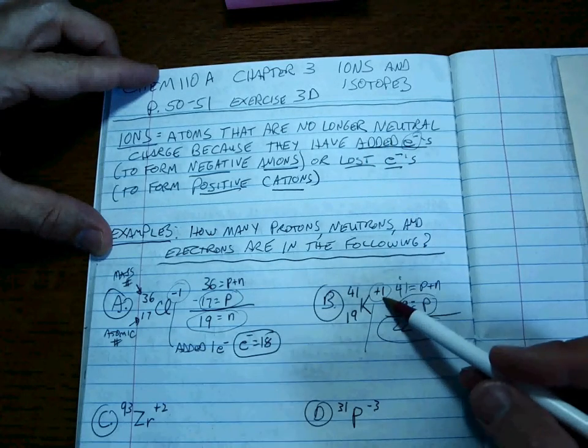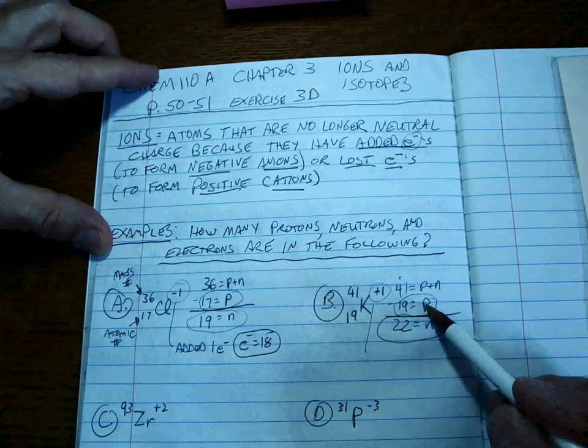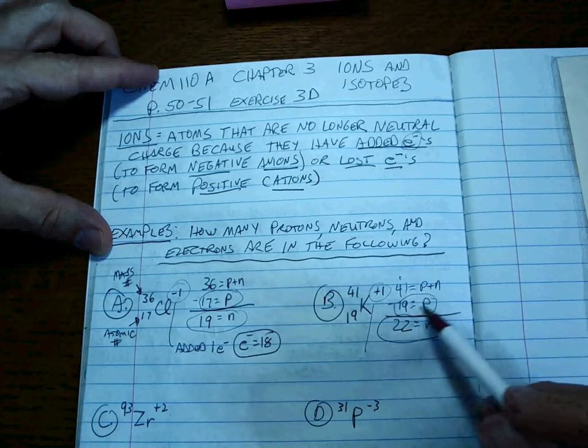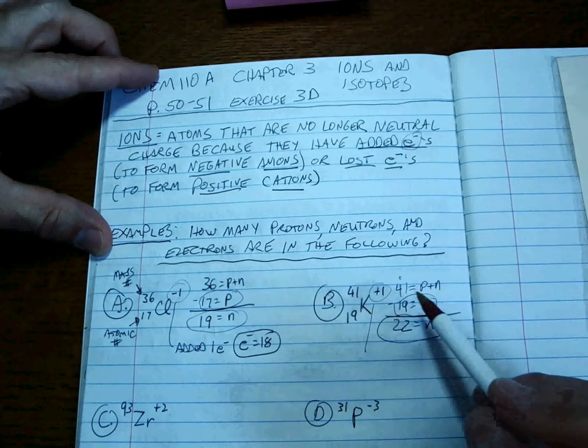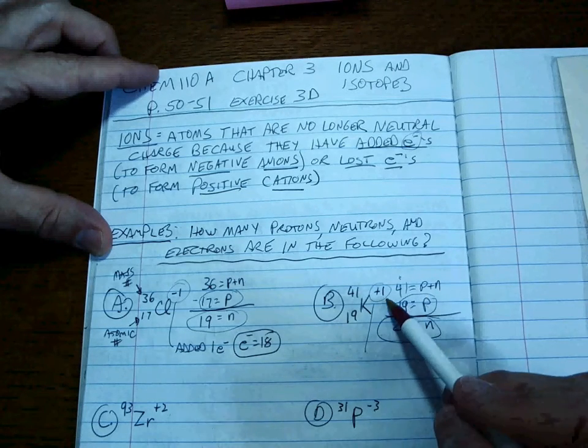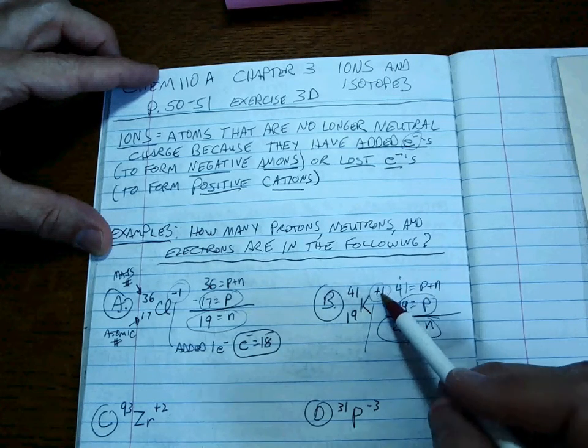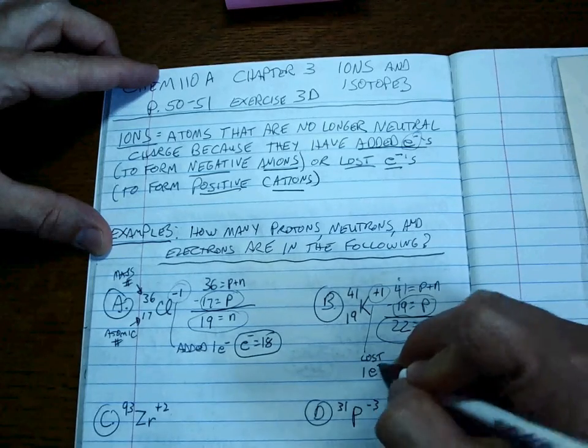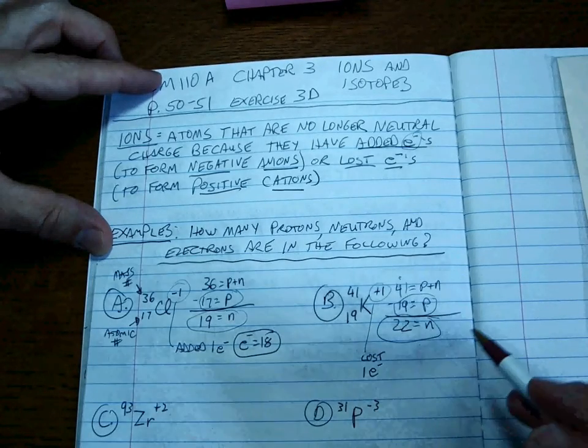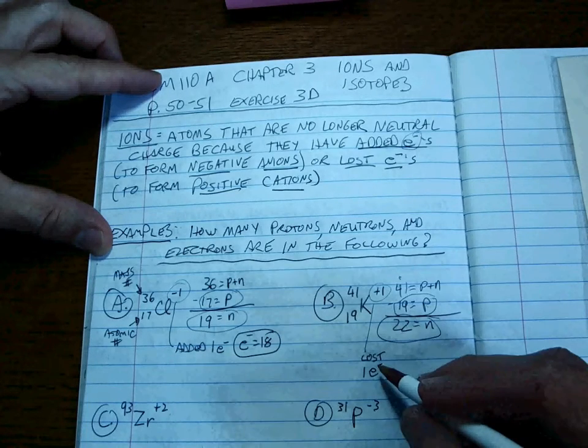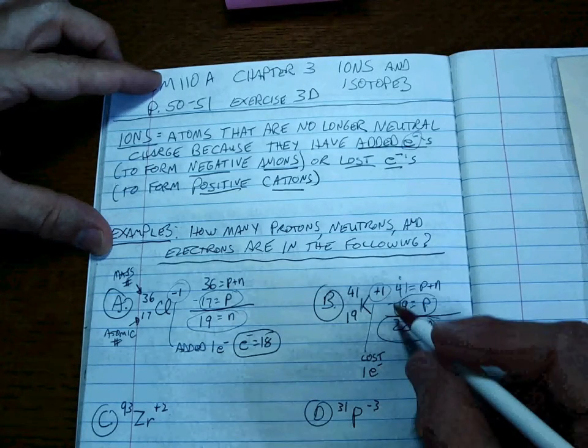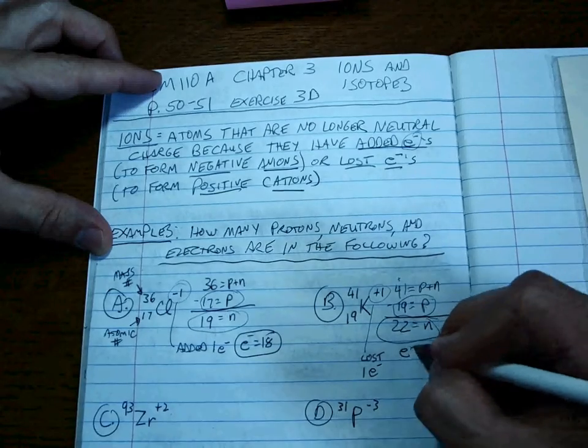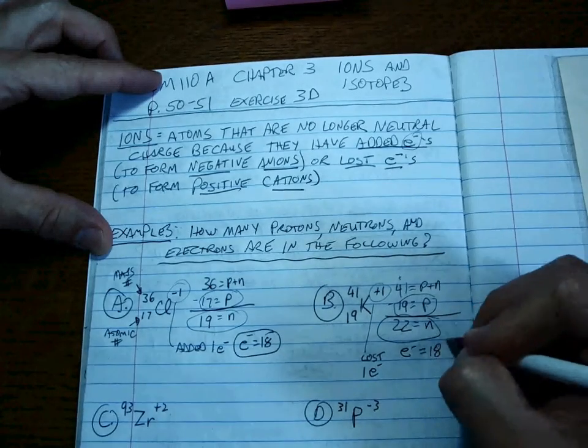This is the charge left after we either add or lose electrons. Clearly, if you took away an electron, you'd have more protons than electrons. You'd have more positive charges than negative charges. So plus one means we've lost one electron. If you lost one electron with a plus one charge, that means there has to be 18 electrons.